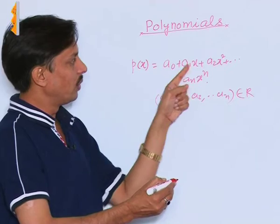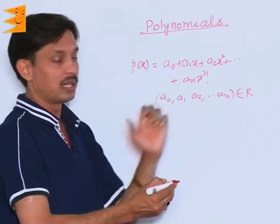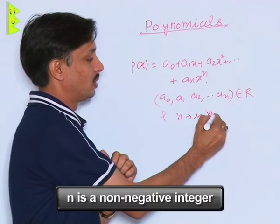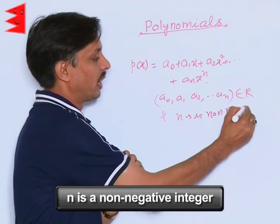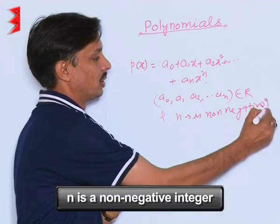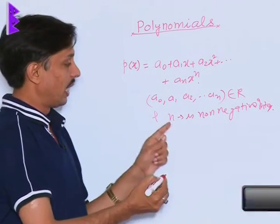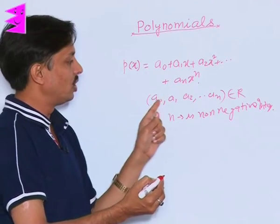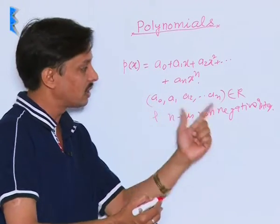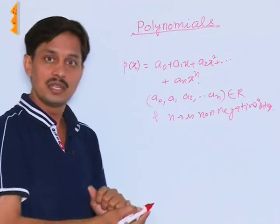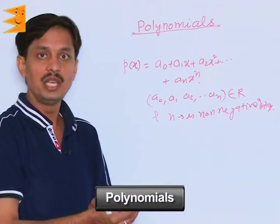If a0, a1, a2, ..., an are the real numbers and n is non-negative integer, and these constants or coefficients are real numbers, then this type of combination is known as a polynomial.